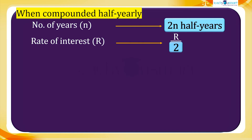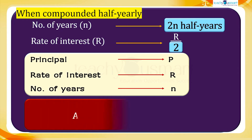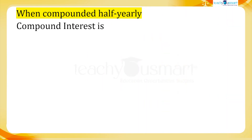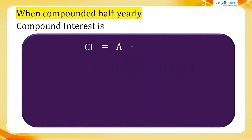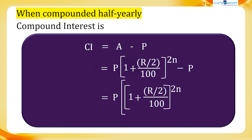We can generalize this as: if principal equals P, rate of interest equals r, and number of years equals n, then the amount will be A equals P multiplied by (1 + r/2 ÷ 100) raised to the power 2n. And compound interest equals P multiplied by (1 + r/2 ÷ 100) raised to 2n, minus P, which equals P multiplied by [(1 + r/2 ÷ 100) raised to 2n minus 1].